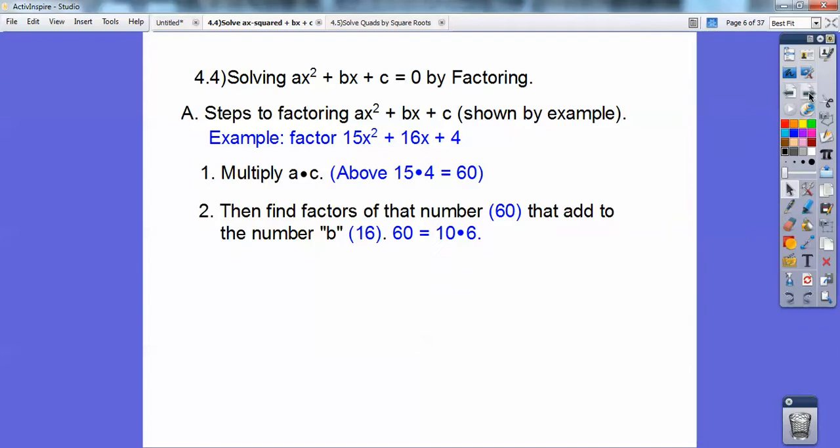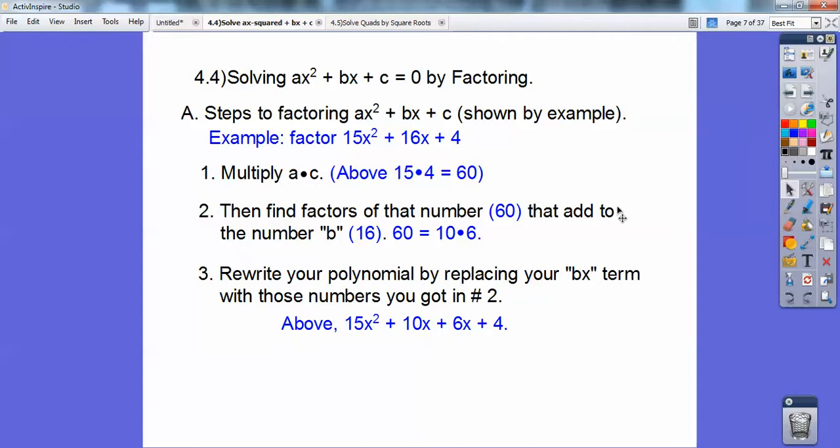And then you think of factors of that number 60 that add to the middle term 16. Well, 60 also equals 10 times 6. All right, you with me? Okay, so then I rewrite your polynomial and replace this 16x with the two numbers that I got right here, 10x and 6x. So there's my 16x right there. And the reason why I did that is because I can now factor this by grouping.